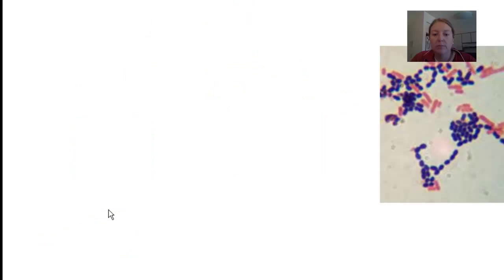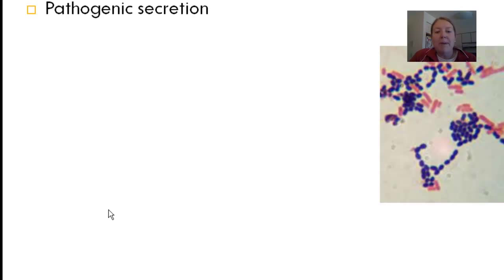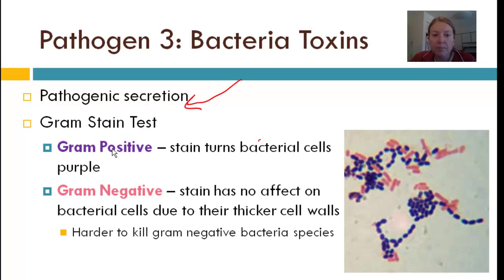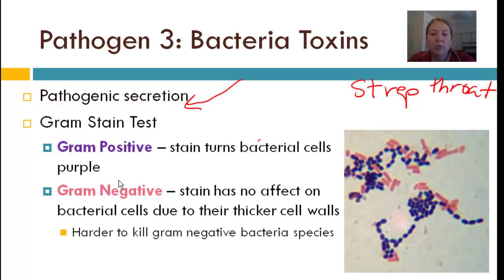How do bacteria actually infect us? The ones that cause damage release toxins, which are just pathogenic secretions. If you think you have a bacterial infection — say strep throat — when you go to the walk-in clinic to get your throat swabbed, they'll do a lab test on that. They'll grow the bacteria, then treat it with a couple of different types of stain. This whole process is called a gram stain.